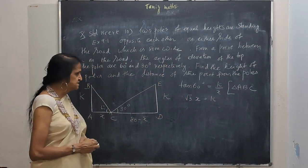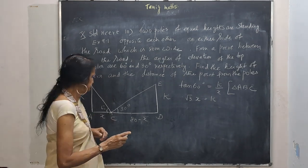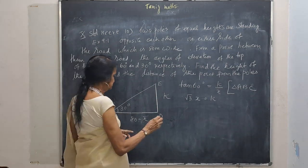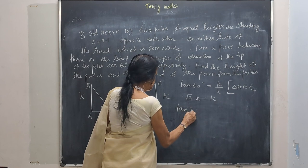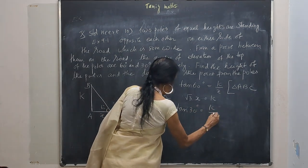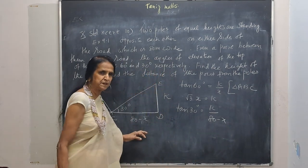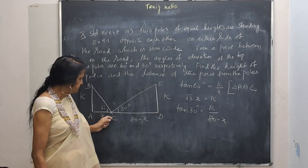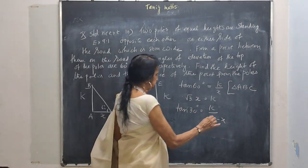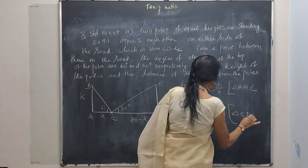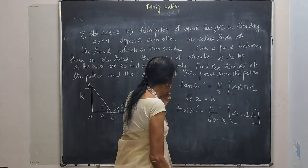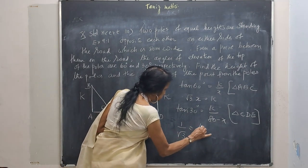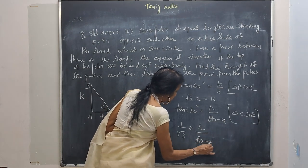Consider triangle CDE. Tan 30, K by 80 minus X. Tan 30 degrees, K by 80 minus X from triangle CBE. Tan 30 is 1 by root 3. K by 80 minus X.